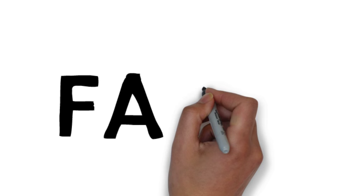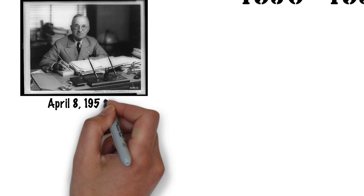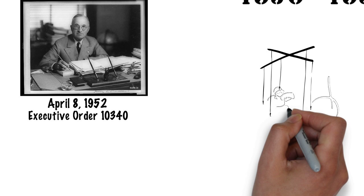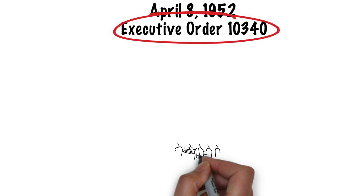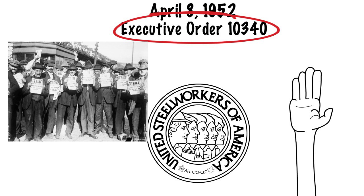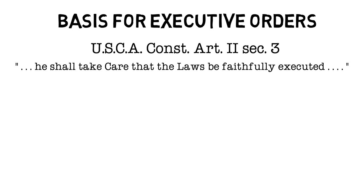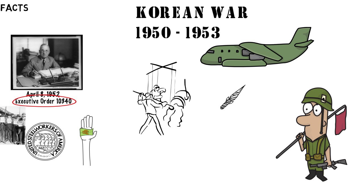So here are the facts. In April of 1952, the Korean War was going on. President Truman decided to issue an executive order directing the Secretary of Commerce, Charles Sawyer, to seize and operate most of the nation's steel mills. The reason behind this was that the United States Steelworkers of America were planning to have a nationwide strike because they couldn't come to terms over wages. Because with the country being at war, the government was relying on defense contractors, who were relying on the steel industry to produce steel, bullets, armor, and those kinds of things. Now, Congress did not approve the order.